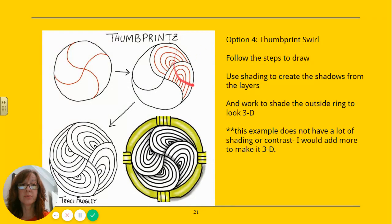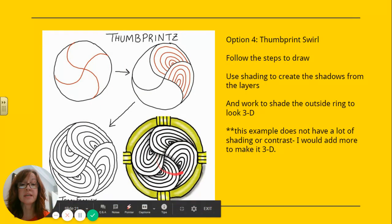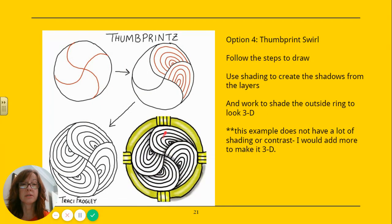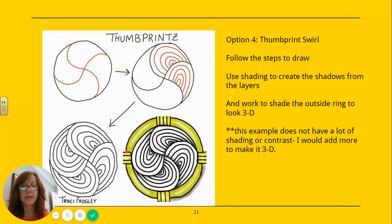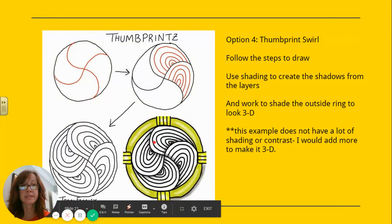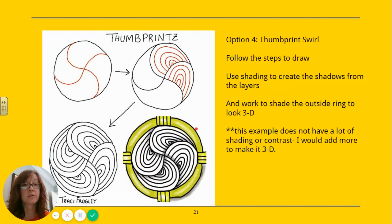The next one is the thumbprint swirl. So again, you're just following these directions. Now, this example does not have a ton of shading. So I'm going to rely on you to add a little bit more to make it believable. And then to make this ring around the outside seem 3D, if you're shading on the edges and leaving a highlight, it will make it seem three-dimensional as well. And with any of these, you are welcome to work in colored pencil if you'd like, or you can just stay with graphite.